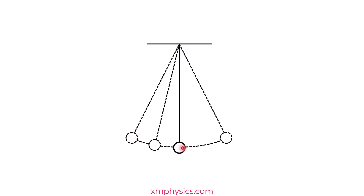To go the full cycle is one period. To go halfway is half a period. And to go a quarter of the way is a quarter of a period. So to go from the extreme position to the exactly midway point — one-eighth of a period?